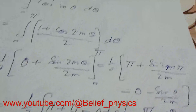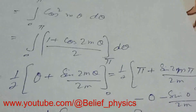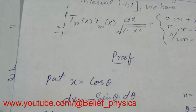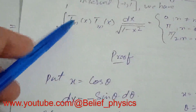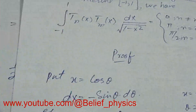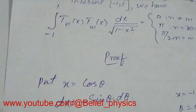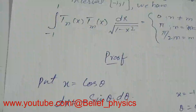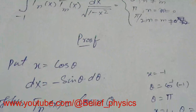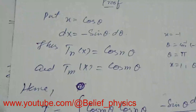We have proved all three cases of the orthogonal properties of the Chebyshev polynomials: the integral from minus one to one of T_n(x) T_m(x) dx over the square root of one minus x squared equals zero when n is not equal to m, equals pi when n equals m equals zero, and equals pi over two when n equals m but not equal to zero.